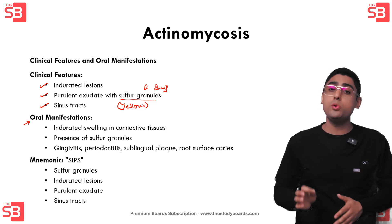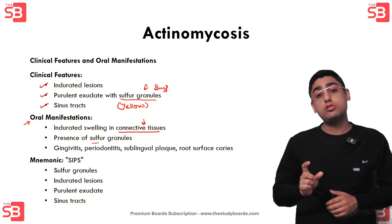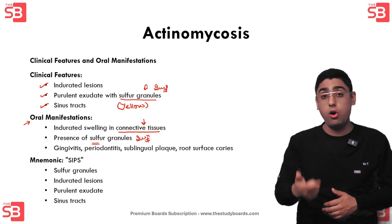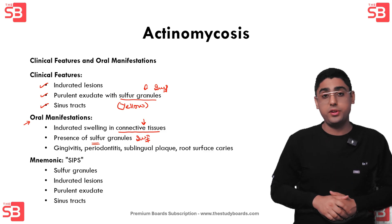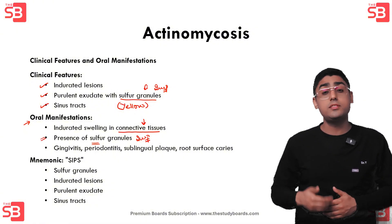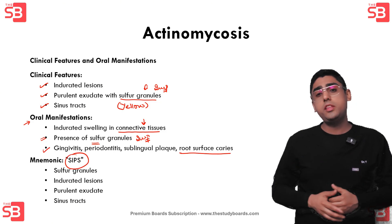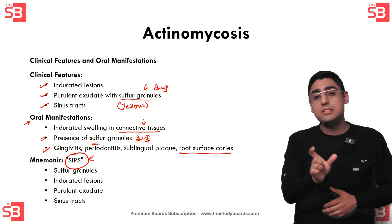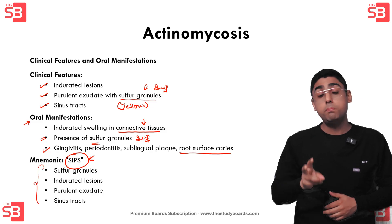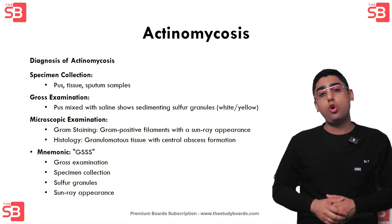The oral manifestations include indurated swellings in the connective tissues and the presence of sulfur granules. There is also involvement in gingivitis, periodontitis, sublingual plaque, and even root surface caries. To remember all of this, use the mnemonic SIPS — S-I-P-S — which stands for Sulfur granules, Indurated lesions, Purulent exudate, and Sinus tracts.